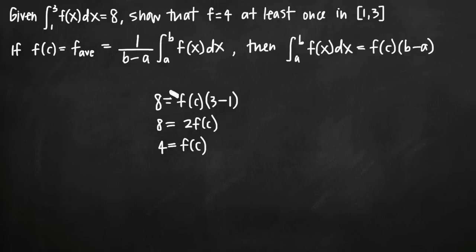In other words, if you know the area under the curve on the interval and you know the interval, then you can find the average value of the function f of c, because f of c is equal to the average value of the function. Therefore, this tells you that the average value of the function on the range 1 to 3 is 4, and that the function assumes the value 4 at least once in that interval.